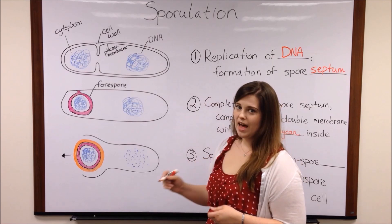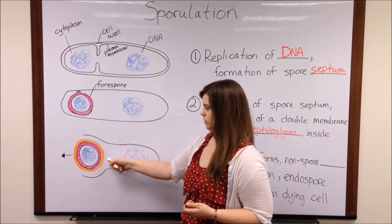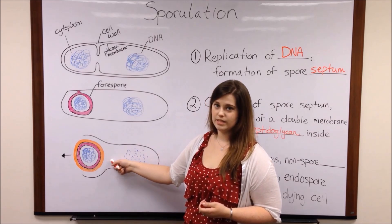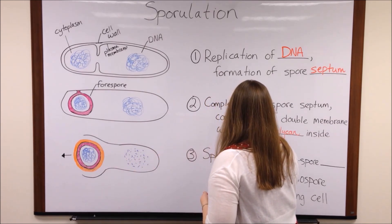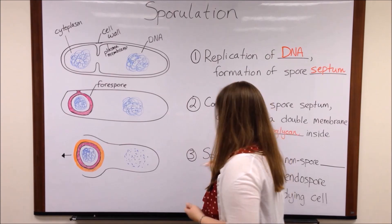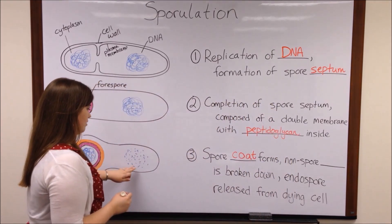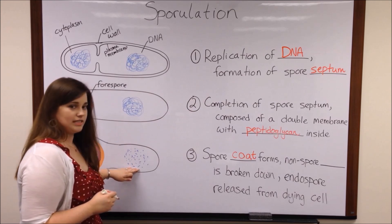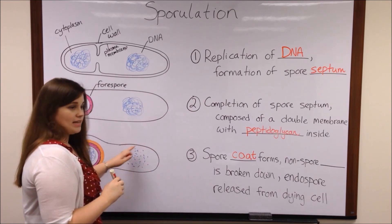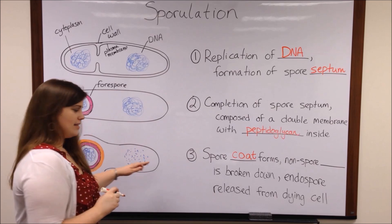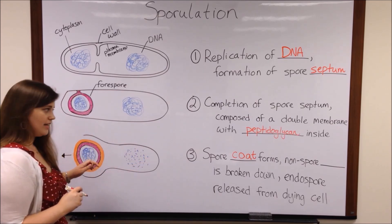After that, a very resistant spore coat goes on the outer layer. At this point, the non-spore DNA — so the original DNA that was replicated — begins to break down. So the only DNA that is left is the DNA that is inside the endospore.